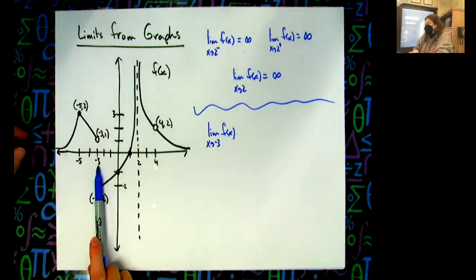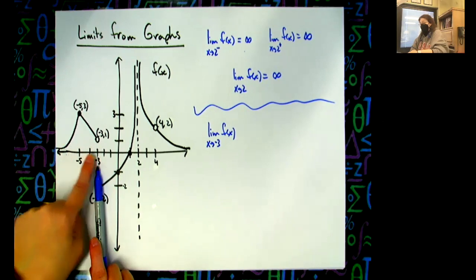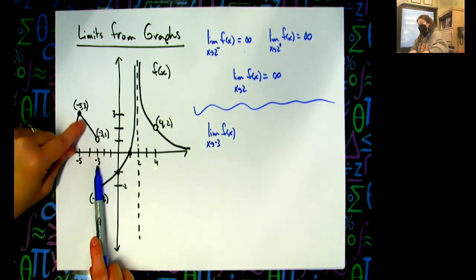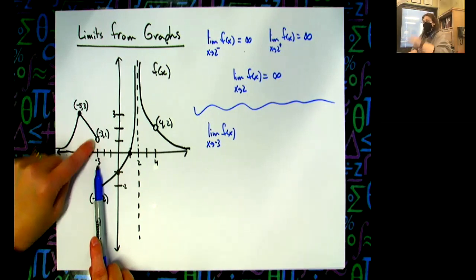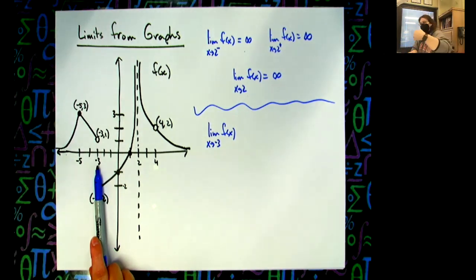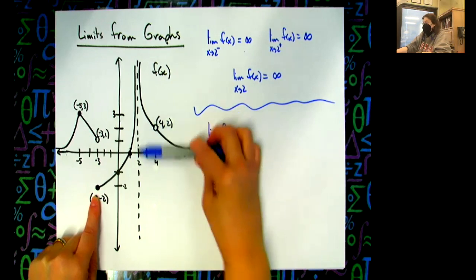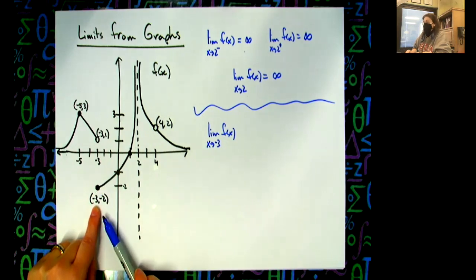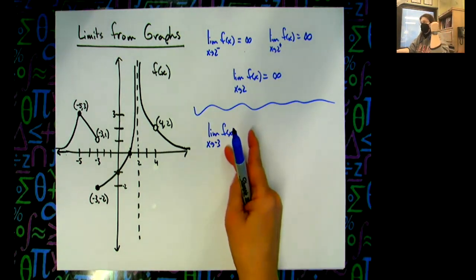To find the overall limit I've got to check from the left and from the right. Coming from the left, I don't care what's happening all the way out here — I want to know what's happening as it gets infinitely close to negative three. The function is approaching a y value of one. It makes no difference whether that's an open or closed dot, because I don't care what happens at negative three, only as it gets infinitely close. Now coming from the right, as it gets infinitely close to negative three, the y value is negative two. So the limit from the left was one, and the limit from the right is negative two — this overall limit does not exist.